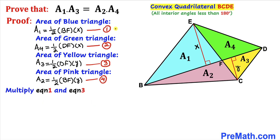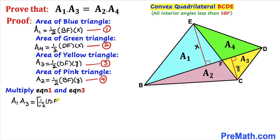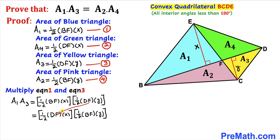Now let's multiply equation one and equation three. On the left hand side, A sub 1 times A sub 3 equals one half times BF times X, multiplied by one half times DF times Y. In the next step I rearrange them by switching the positions of BF and DF — this doesn't make any difference whatsoever.